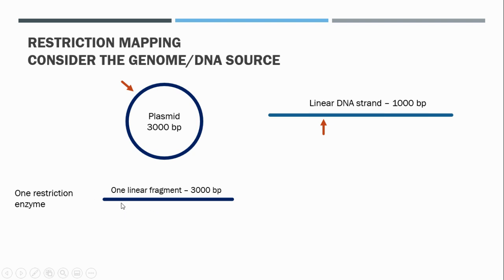When we cleave a circular fragment with one restriction enzyme, we call this linearizing the fragment, because now the fragment is no longer circular — it's linear. Just as if you were to take scissors and cut a rubber band, you end up with just one long strand that's not joined in the same way. Restricting a circular DNA fragment with one restriction enzyme gives you one linear fragment.